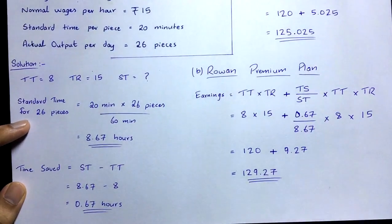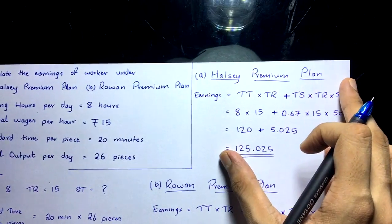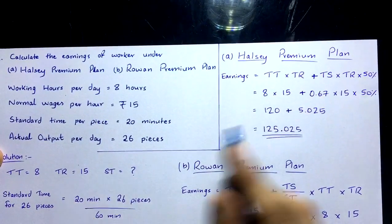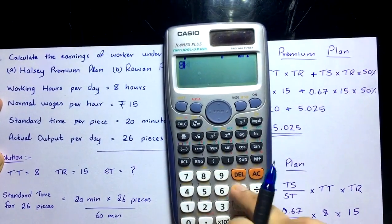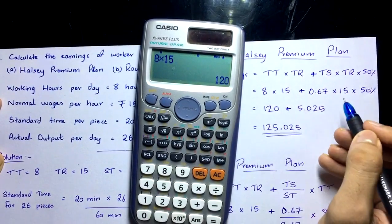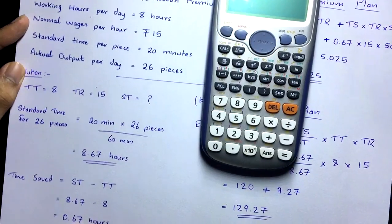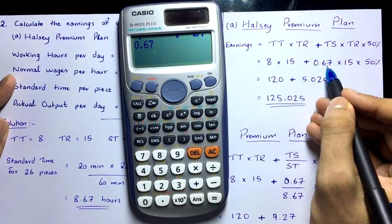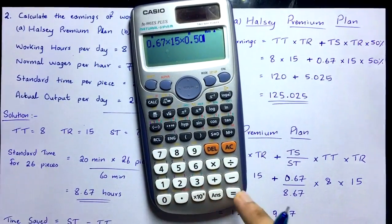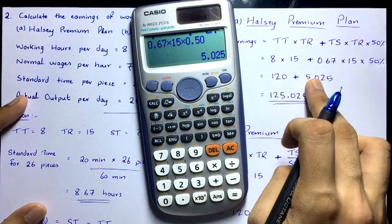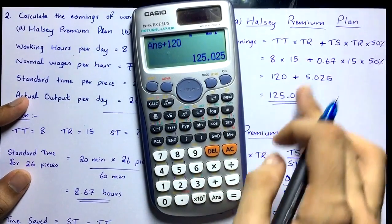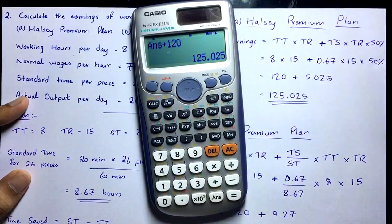For the Halsey Premium Plan: Basic = Time Taken × Time Rate = 8 × 15 = ₹120. Bonus = Time Saved × Time Rate × 50% = 0.67 × 15 × 0.50 = ₹5.025. Total earnings under Halsey Premium Plan = 120 + 5.025 = ₹125.025.